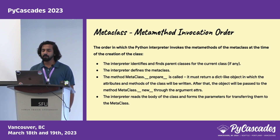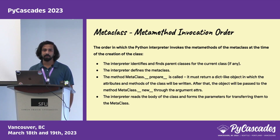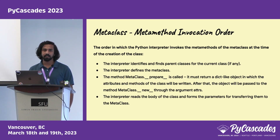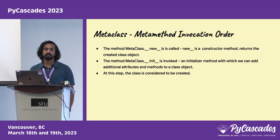There is an order in which metaclass methods are invoked when defining a class: first the interpreter identifies the parent classes and defines the metaclass. Then __prepare__ is called, initializing the namespace and returning a dict-like object. The body of the class is then read. After that, __new__ is called — it's the constructor method returning the created class object. Then __init__ is called, initializing the class. At this step, the class is considered fully created.